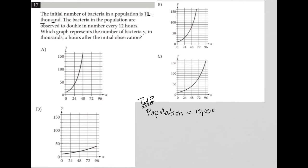The next sentence says the bacteria in the population are observed to double in number every 12 hours. Okay. So times two per 12 hours. You're always going to get times two, same as doubling for every 12 hours. Which graph represents the number of bacteria Y in thousands X hours after the initial observation.